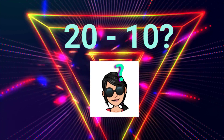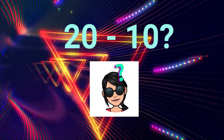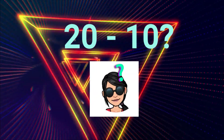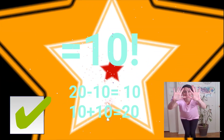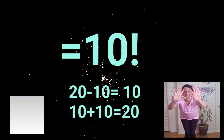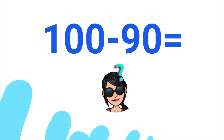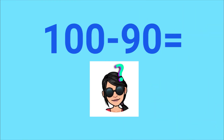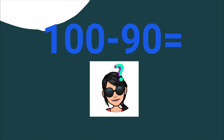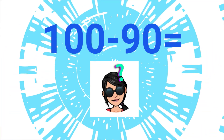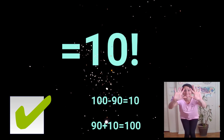Twenty take away ten equals ten. One hundred take away ninety equals ten.